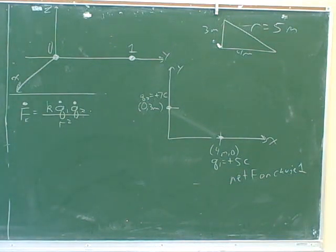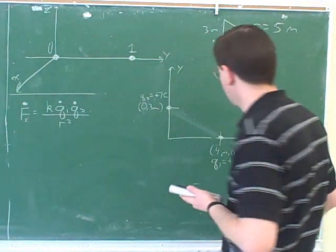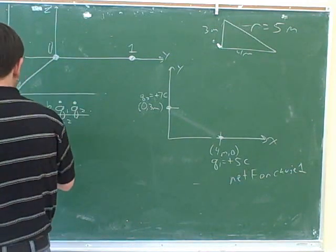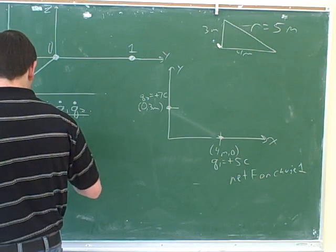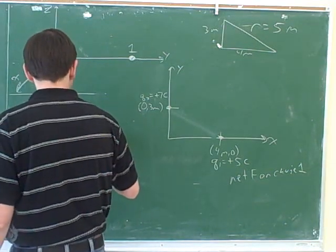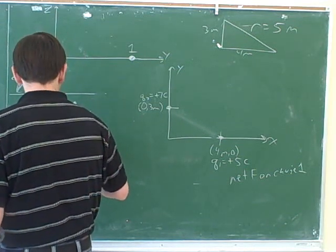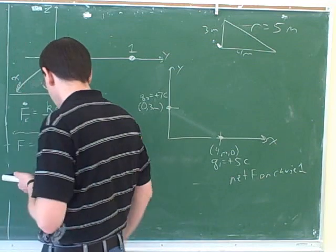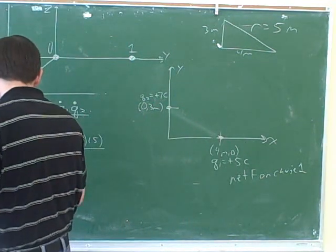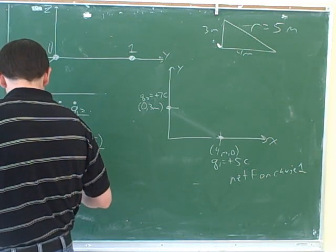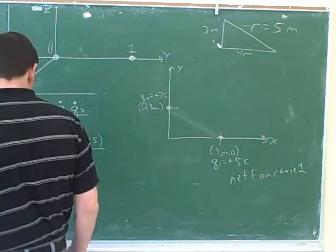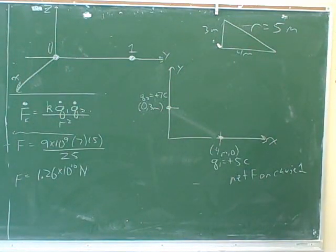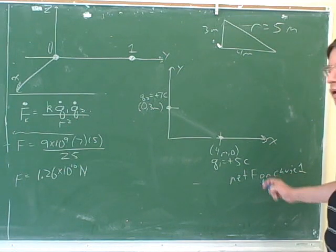So, can I plug that into the equation? Right. So, k is 9 times 10 to the 9th. Right. 7 times 5 over 25. And then I get 1.26 times 10 to the 10th. Okay, now we were trying to figure out the net force on charge 1. This is the magnitude.